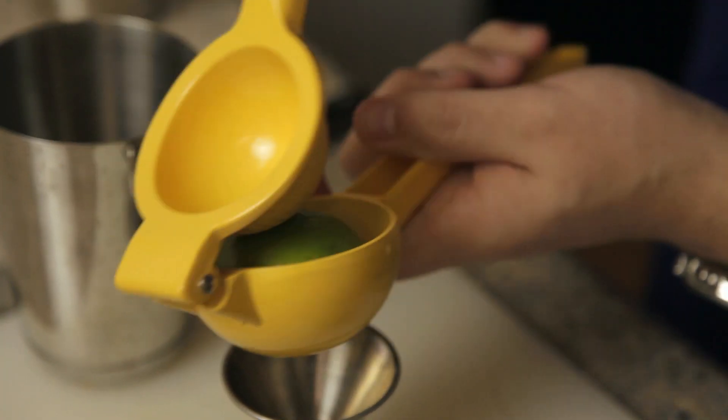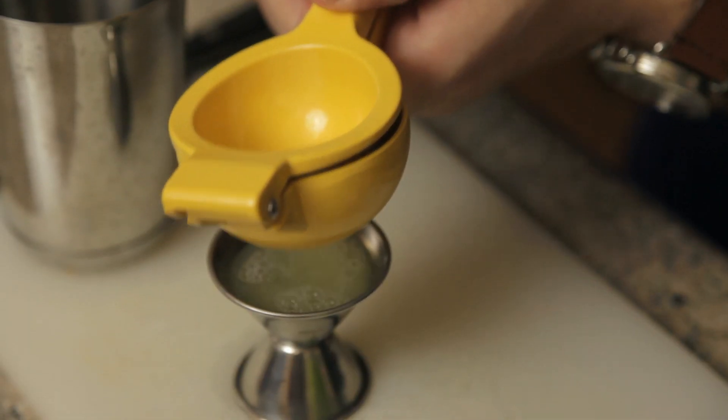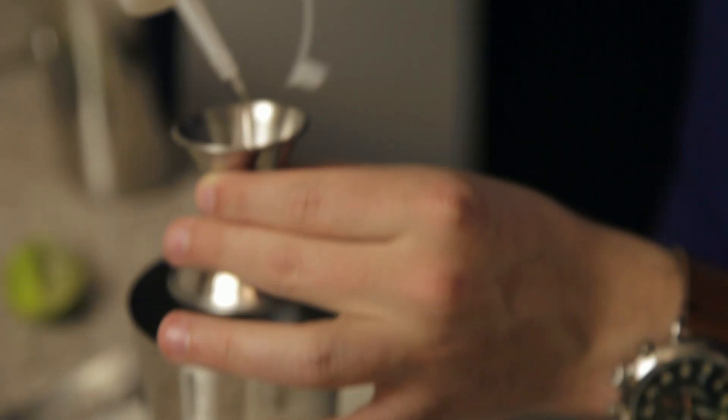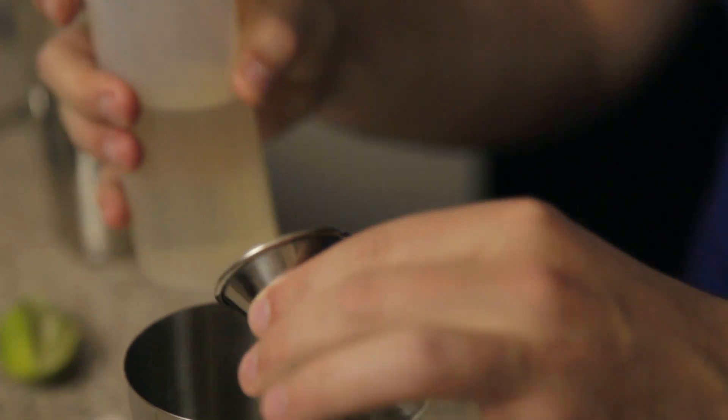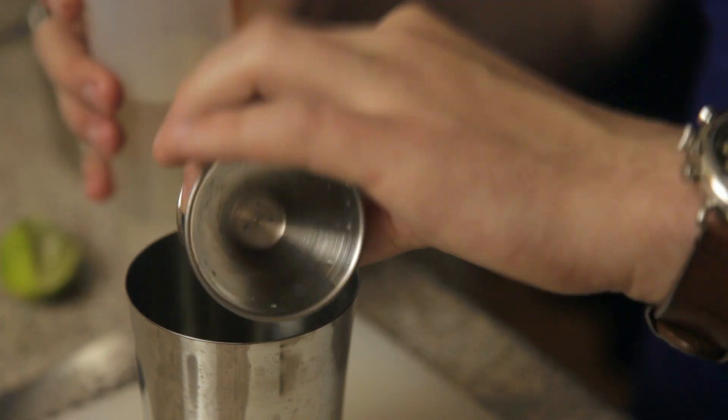I'm going to juice the whole lime, which is going to give me about two ounces of lime juice. I really like the tanginess of fresh lime. I love the scent. It really goes a long way in this drink. To the lime juice, I'm going to add a little over a half ounce of simple syrup. It's really going to help counteract the tartness of the limes.